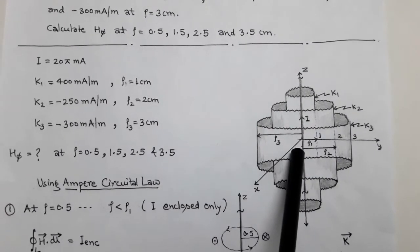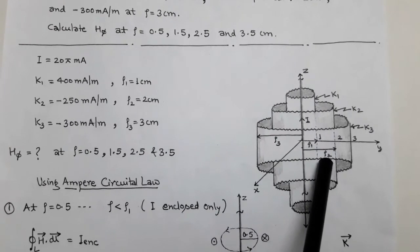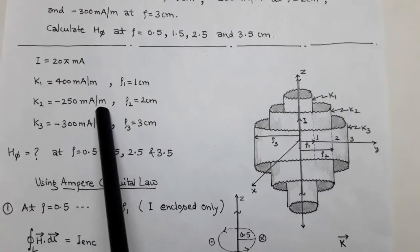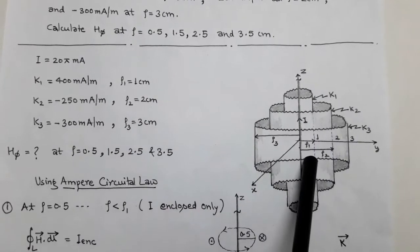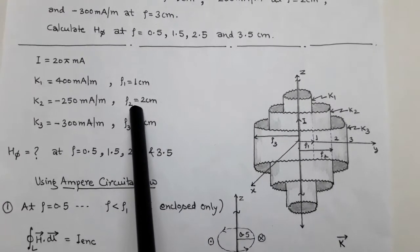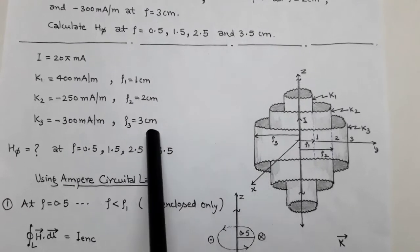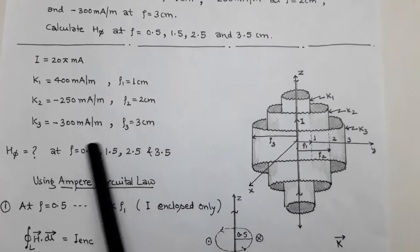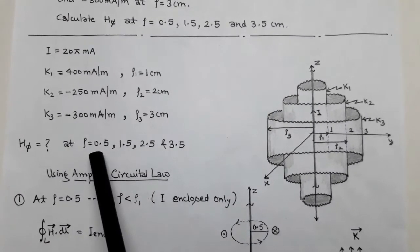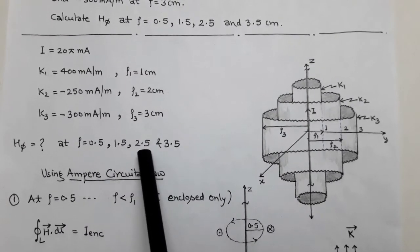Surrounding the filament and current sheet K1, there is another cylindrical sheet K2 carrying a surface current density of minus 250 mA per meter, situated at ρ = 2 cm. There is a third cylindrical current sheet at ρ3 = 3 cm carrying surface current density K3 of minus 300 mA per meter. We have to determine H_φ at ρ = 0.5, 1.5, 2.5, and 3.5 cm.